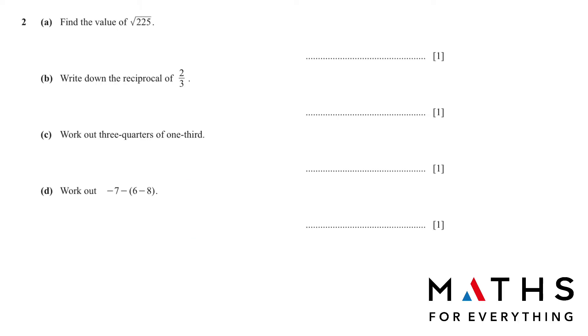The second question is quite easy. Find the value of root 225. Just put this in the calculator and you will get the answer 15. Part B: Write down the reciprocal of 2 over 3. Reciprocal means where you just flip the number over. So the denominator will be written in the numerator and the number in the numerator in the denominator.